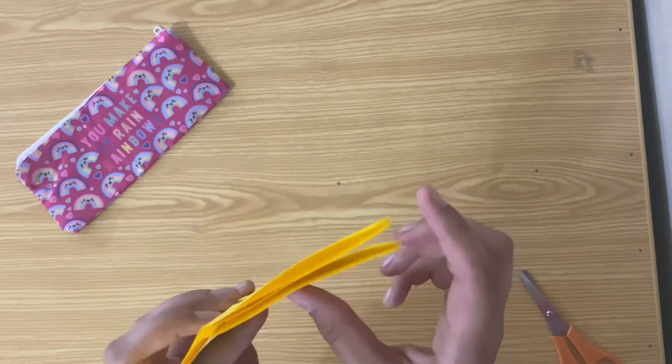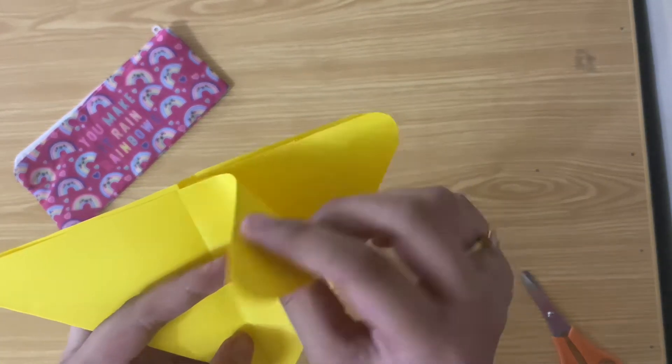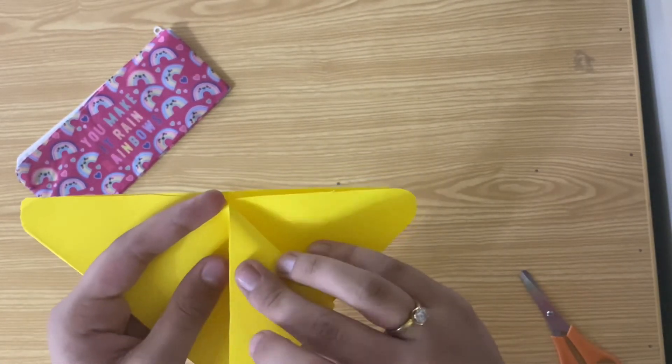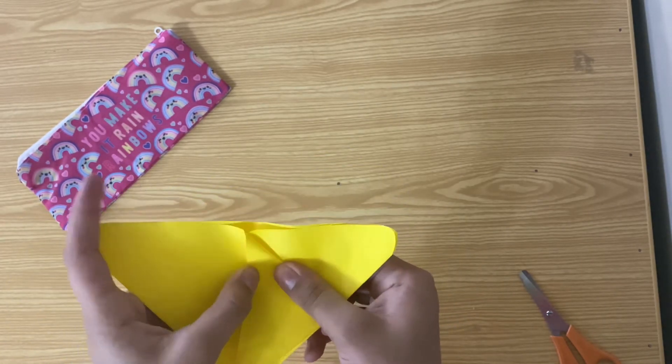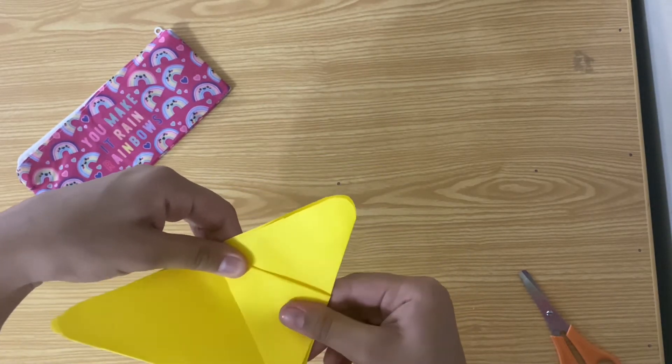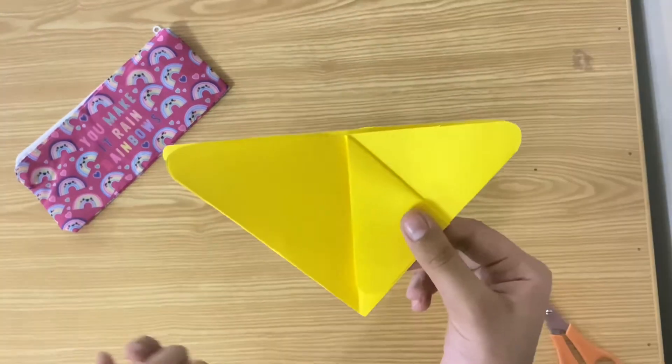Now you're going to get one of these flaps. You have two flaps. Get one of them and put it down this way. Do the same with this side.